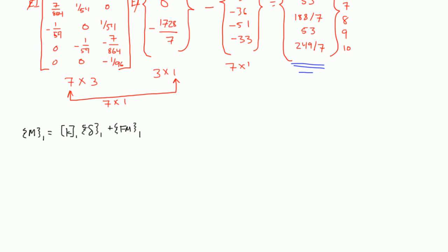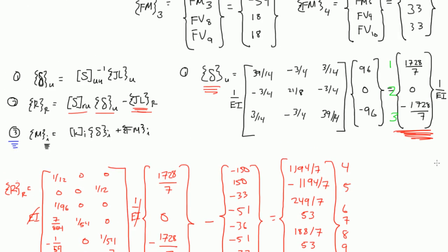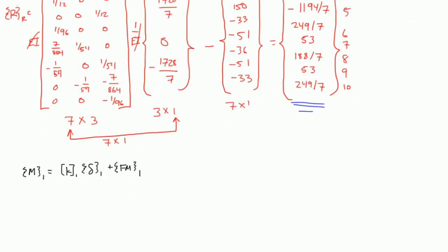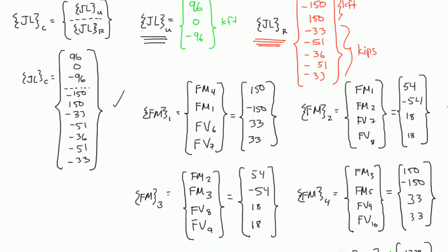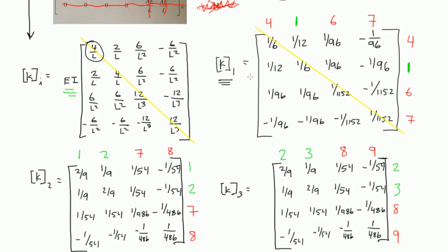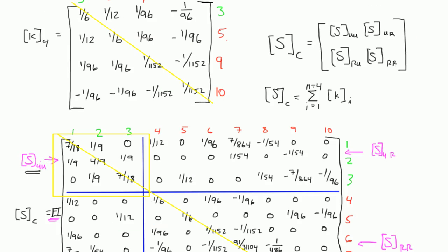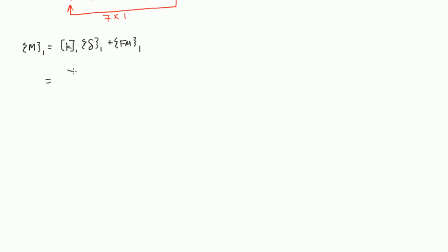And M sub 1 is equal to your K matrix 1 times your delta matrix 1 plus FM 1. And, really, we have all of these except delta 1, right? Earlier on, we figured out what delta U was, but we don't know what delta 1 is. Not to worry, we'll get to that. So let's start plugging the matrices in. So for K sub 1, remember, very early on in this example, we figured out what our K sub 1 matrix was, right? It's this matrix right here, K sub 1.